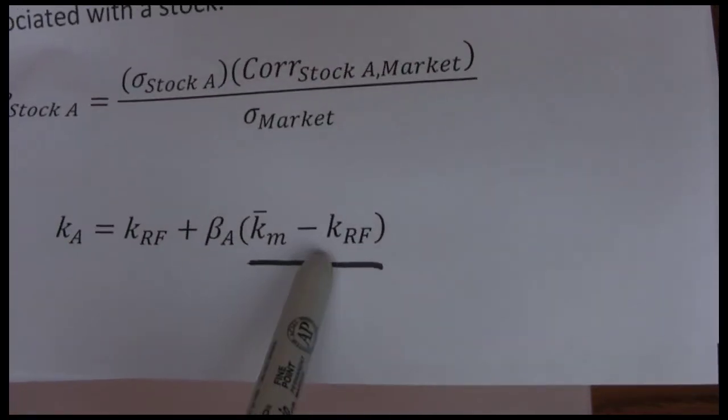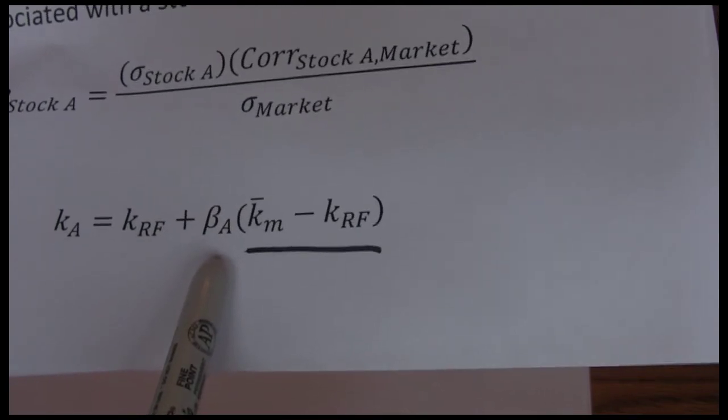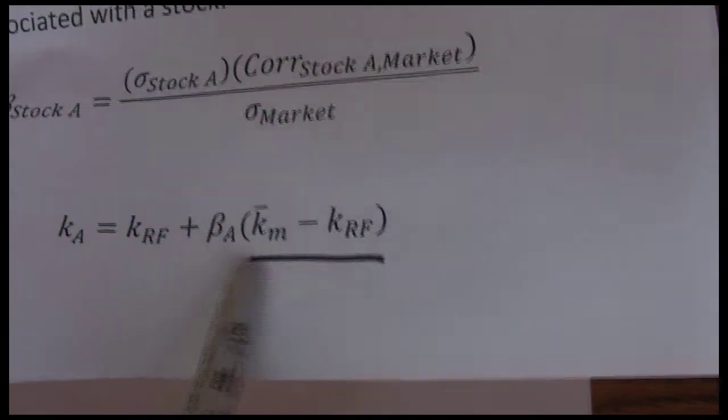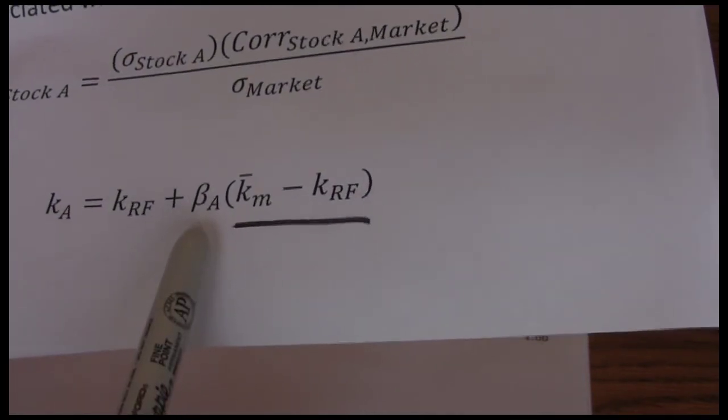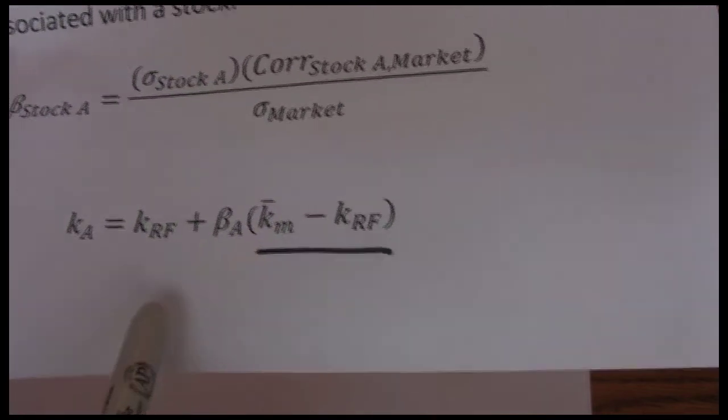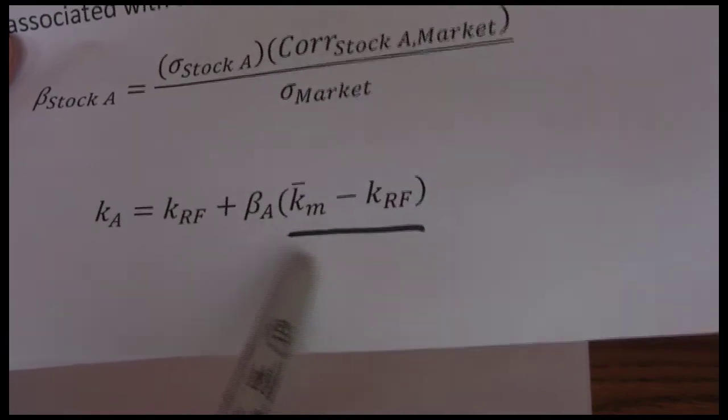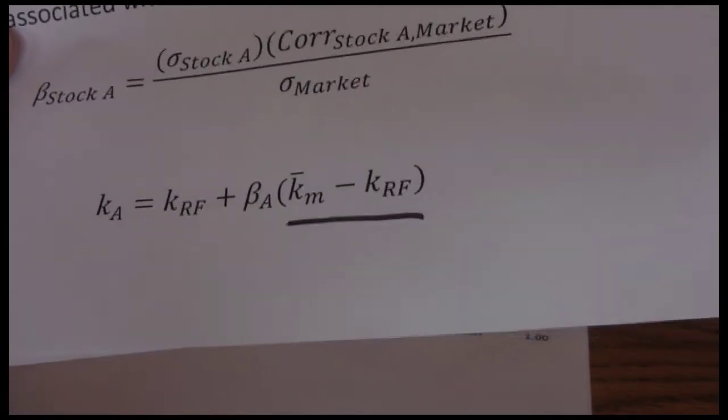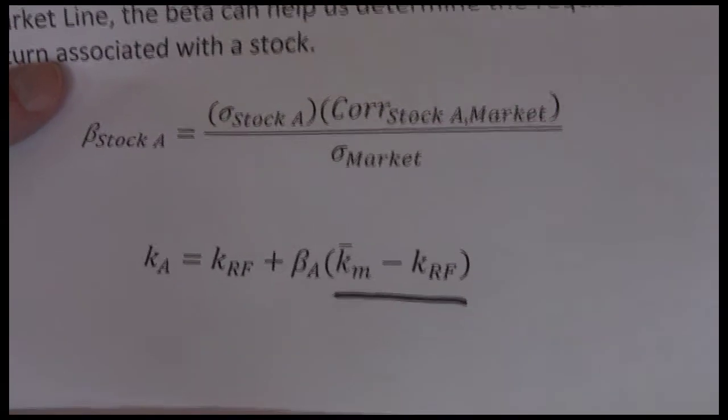But we take the risk premium, multiply by beta. High beta stocks are going to have higher levels of risk, so this times the risk premium will be much larger. Low beta stocks will have less risk when we multiply by the risk premium, it will give us a smaller number. So we take the risk free rate and this gives us kind of like a total risk premium for that specific stock because we multiply it by beta and that gives us the required return for that stock.